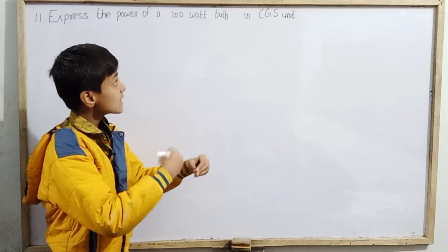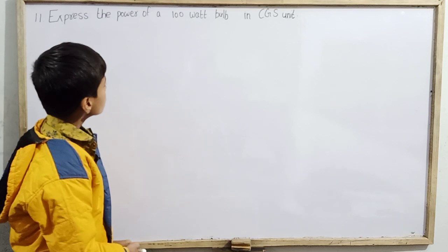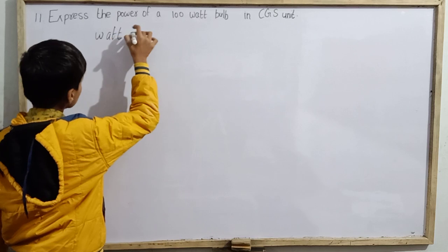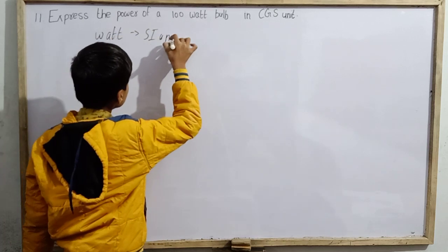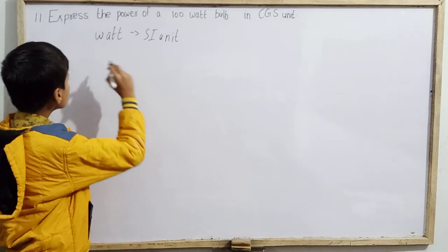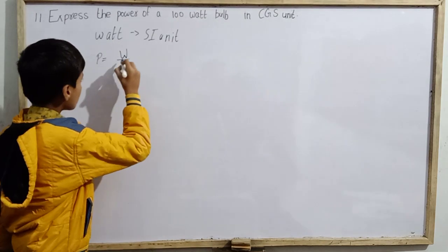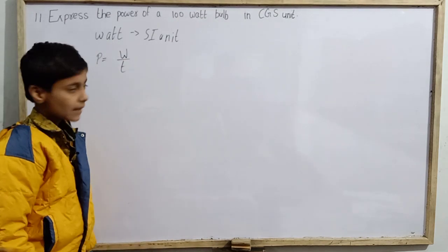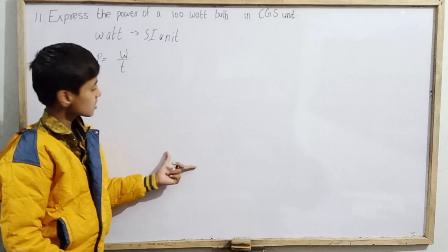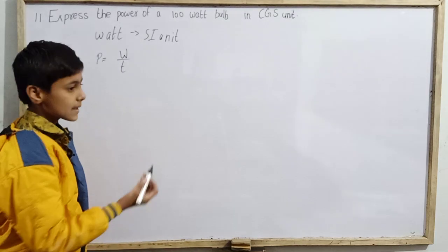Converting from SI to CGS — if we concentrate on this question, what is the SI unit? We know the formula: power P equals work W divided by time T. Now what is the unit of work? Obviously, it is joules.